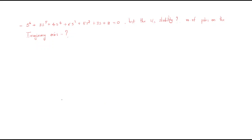Let's discuss a problem. The given characteristic equation is s⁶ + 3s⁵ + 4s⁴ + 6s³ + 5s² + 3s + 2 = 0. We are asked to test stability and find the number of poles on the imaginary axis. First, we check: all powers from s⁶ down to s⁰ are present and there are no negative terms, so we proceed directly to the RH table.